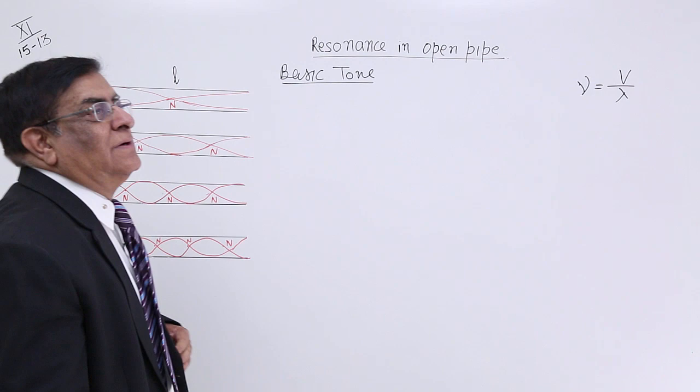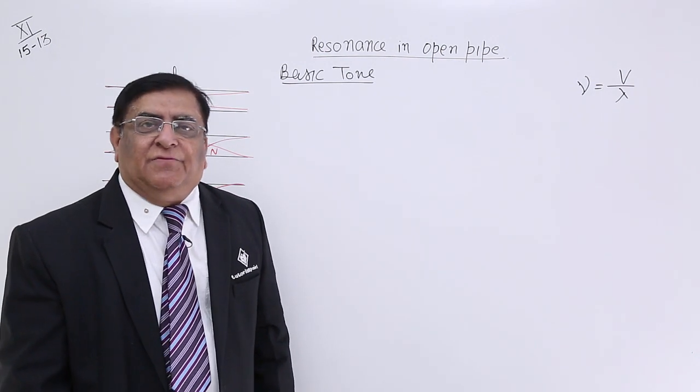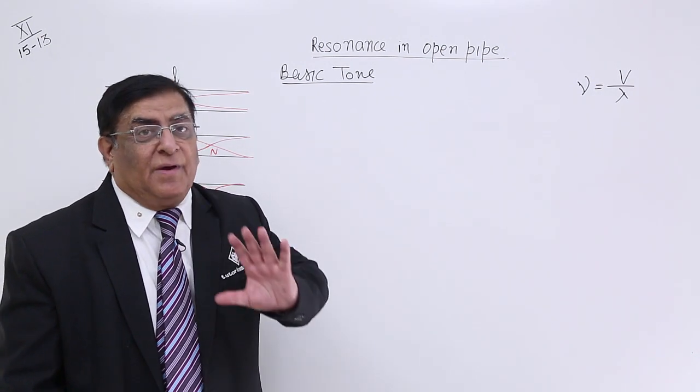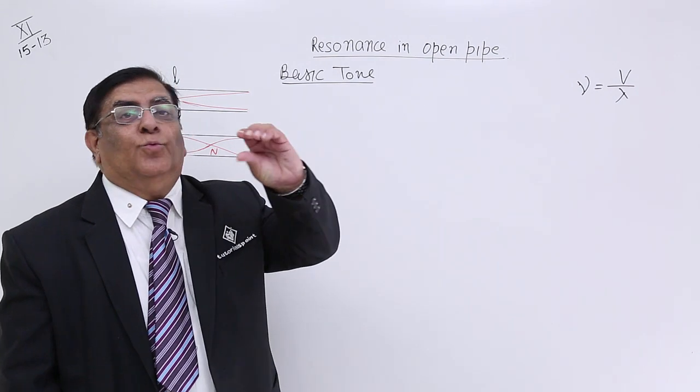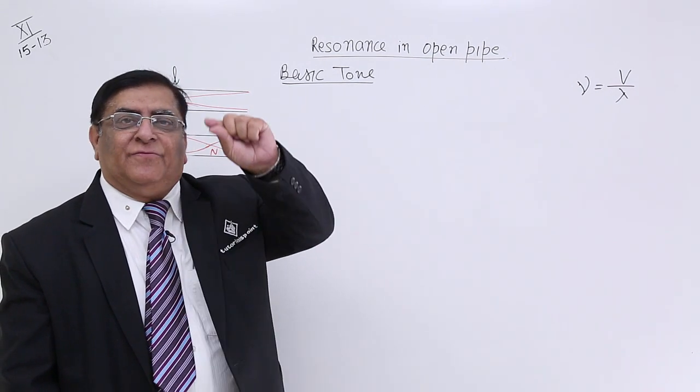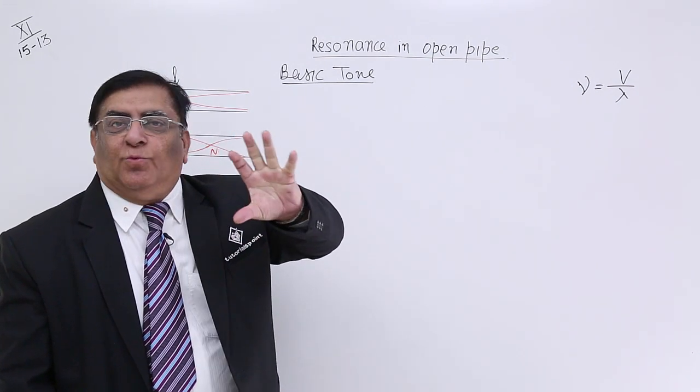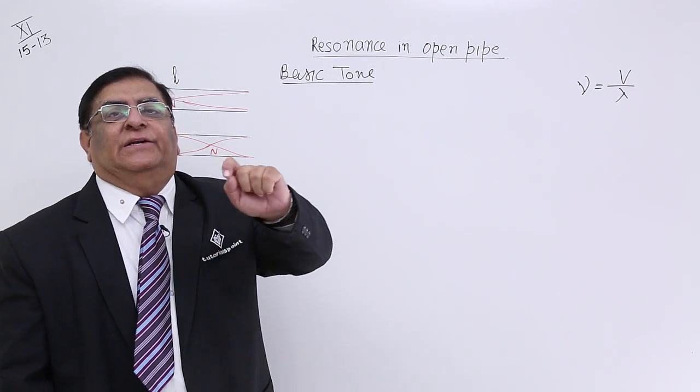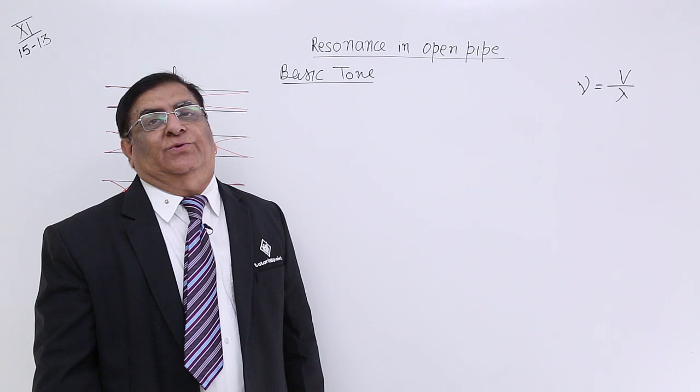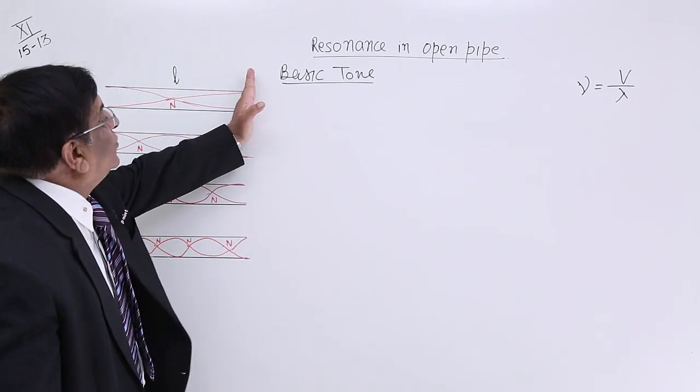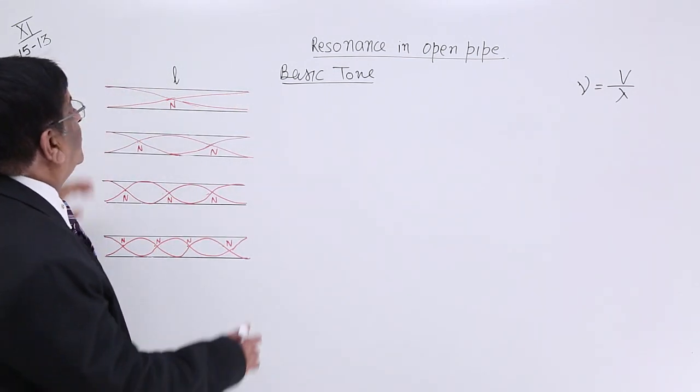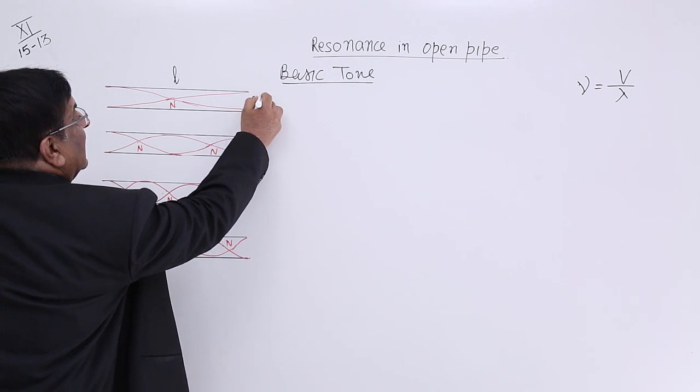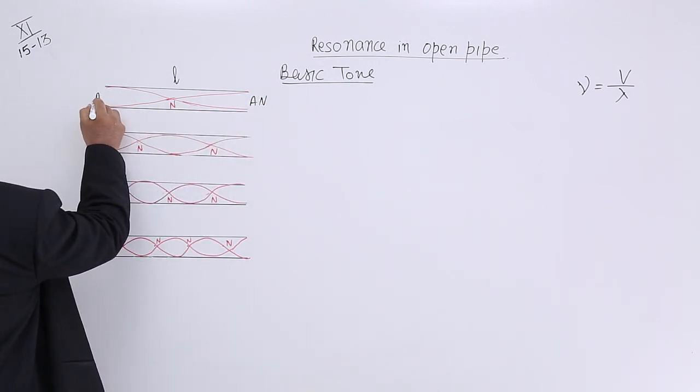Now, when the first time a stationary wave is formed, we remember a rule. At the open end there is a freedom of displacement. There is no binding. So node cannot be formed at the open end. Only anti-node can be formed and it has got both the ends open. So we have to make anti-node here and we have to make anti-node here.